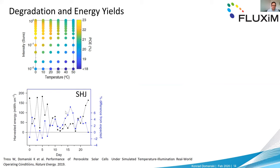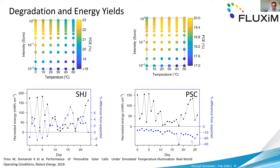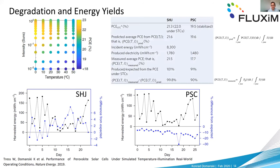For perovskites, the efficiency landscape looks better — they are efficient right where most energy is produced. We then looked at how much energy was produced versus what was expected, based on pre-characterization across the intensity-temperature space. For silicon, energy produced closely matches predictions, showing standard test conditions are accurate for predicting energy yield of silicon heterojunction in moderate climates. For perovskites, we see a full 10% loss to degradation across 24 days.